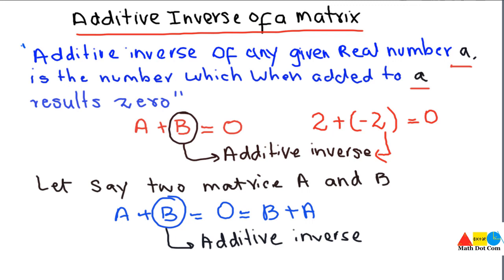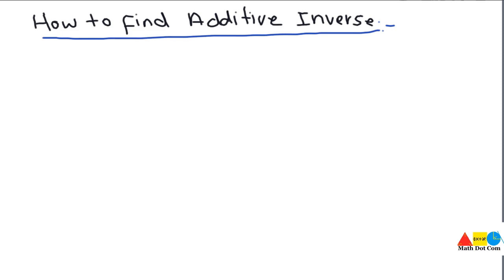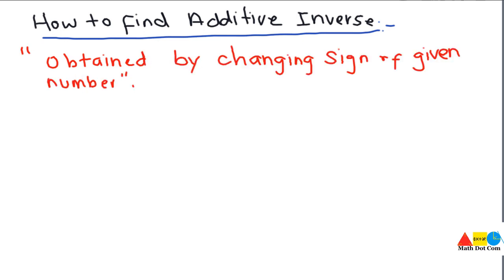The additive inverse of any matrix can be obtained by inverting the sign of that matrix. To find the additive inverse, you change the sign of each element. For a real number you change its sign, and for a matrix you change the sign of every element since a matrix consists of multiple elements arranged in rows and columns. It is denoted as minus A, where A is the given matrix.